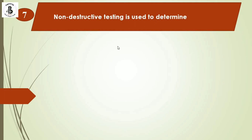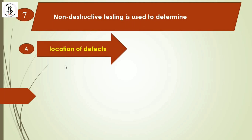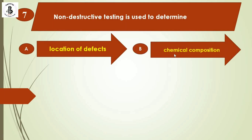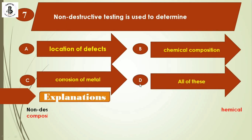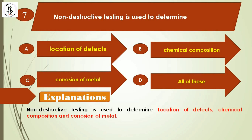Next question: Non-destructive testing is used to determine — option A: location of defects; option B: chemical compositions; option C: corrosion of metal; option D: all of the above. NDT is used to determine location of defects, chemical compositions, corrosion of metals, and can also detect surface and subsurface defects, porosity, or any kind of material defects. The right answer is all of the above — option D.